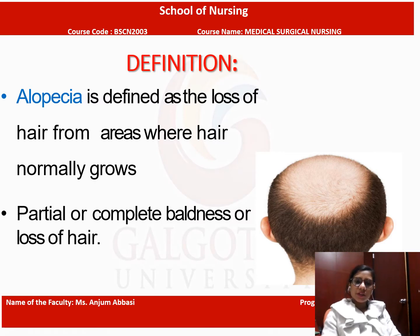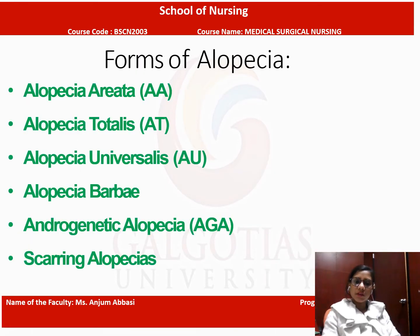The first one is the definition. Alopecia is the term defined as the loss of hair from areas where hair normally grows. If hair is lost from an area concerned with hair growth, that is known as alopecia. It may be partial or complete baldness, or loss of hair.